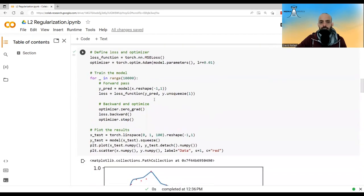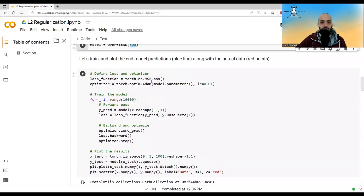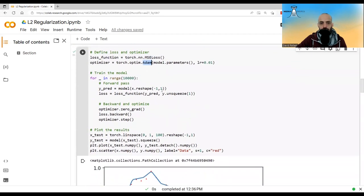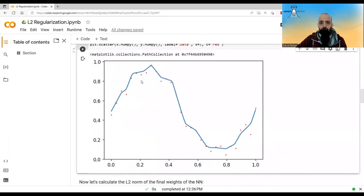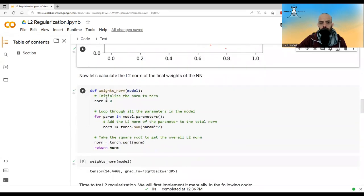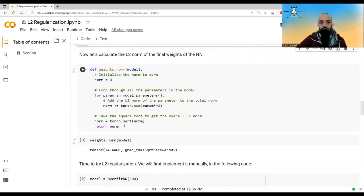The other one projects back the dimensions to one because we only have one output, the Y. I'm creating this network with a lot of hidden layers. Then I'm training it. This is the regular training. I'm using MSE loss, Adam optimizer, forward pass, back propagation. I'm training for this amount of epochs. Then I'm plotting the results. This is the results that I've shown you before. This function calculates the L2 norm for the weights. And the L2 norm for this model is this.